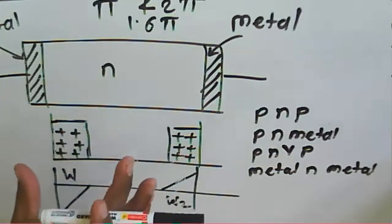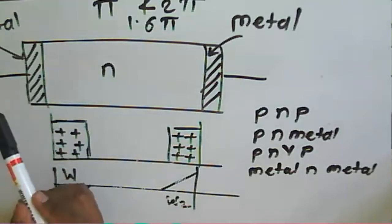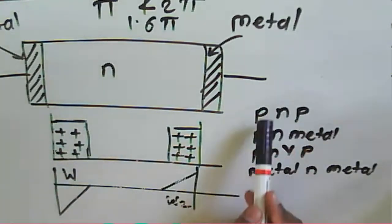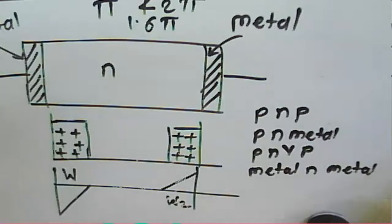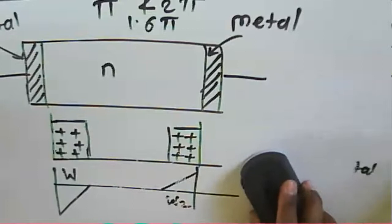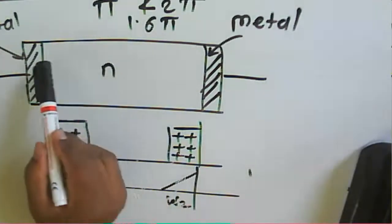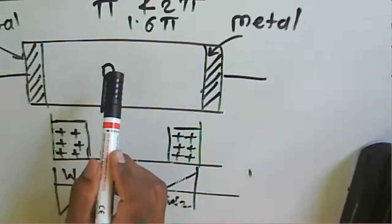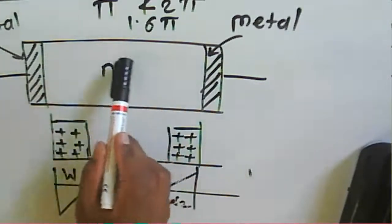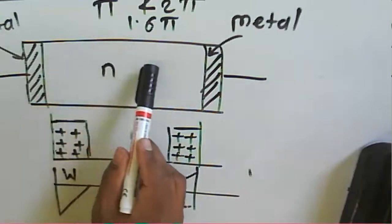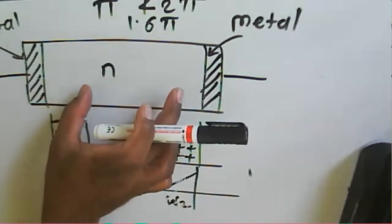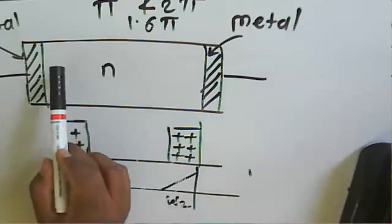To understand how the BARITT diode works, we consider the metal-N-metal structure. An N-type semiconductor is connected to two metallic contacts, and the doping concentration in this region is uniform throughout.